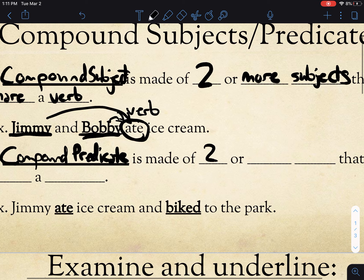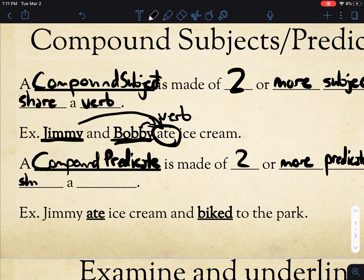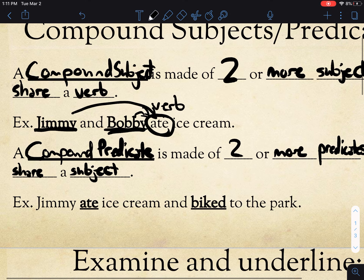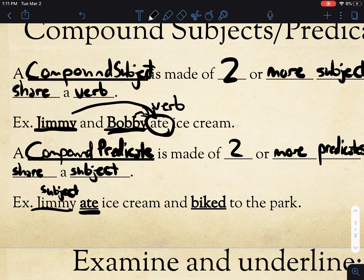Very similarly, a compound predicate is made up of two or more predicates that share a subject. For instance, you have Jimmy as your subject, and he did two things: he ate ice cream and then biked to the park. So he's doing two things — you have your verb 'ate' and you have your verb 'biked.'